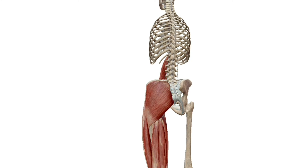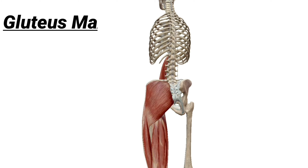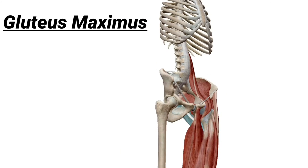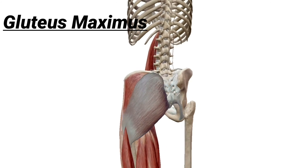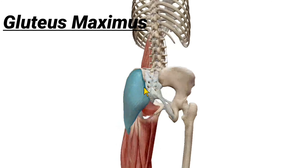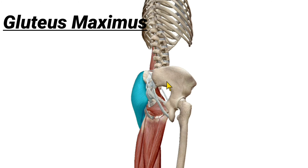Hi everyone, today we learn about the gluteus maximus muscle. In this tutorial we learn about the origin, insertion, innervation, and action of the gluteus maximus muscle. The gluteus maximus muscle is the largest muscle of our body. It is a large, quadrilateral, powerful muscle covering mainly the posterior surface of the pelvis.